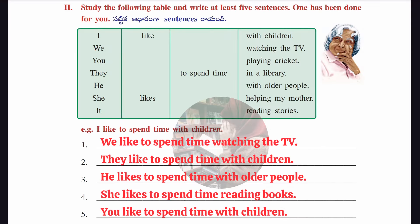The second section says: study the following table and write at least five sentences — one has been done for you. The table has four columns and we make meaningful sentences. One: I like to spend time with children. Two: we like to spend time watching TV. Three: they like to spend time with children. Four: he likes to spend time with older people. Five: she likes to spend time reading books. Six: you like to spend time with children.